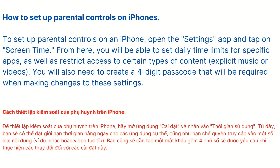To set up parental controls on an iPhone, open the Settings app and tap on Screen Time. From here, you will be able to set daily time limits for specific apps, as well as restrict access to certain types of content such as explicit music or videos. You will also need to create a four-digit passcode that will be required when making changes to these settings.